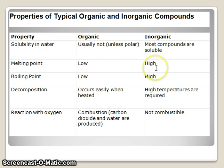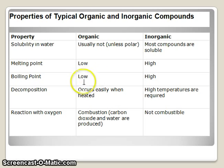If we want to melt an inorganic substance, we are probably talking about breaking either ionic bonds or metallic bonds, which are much stronger, hence the very high melting temperatures for these types of compounds. We'll see relatively low boiling points for organic compounds and relatively high melting points for inorganic compounds.